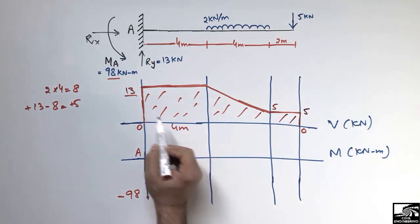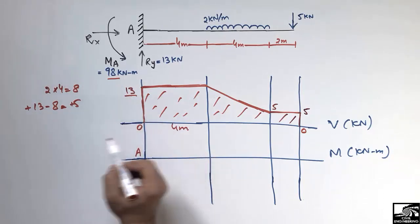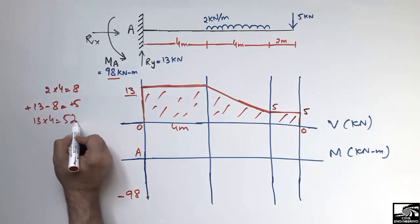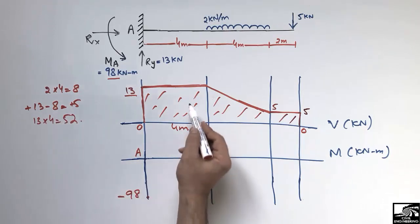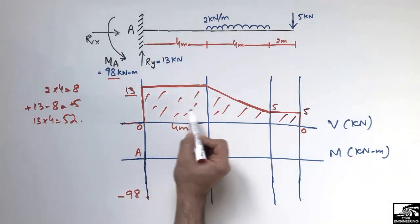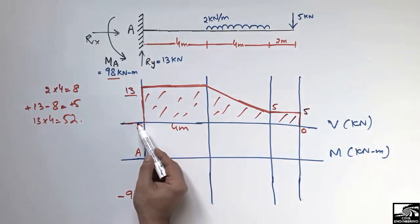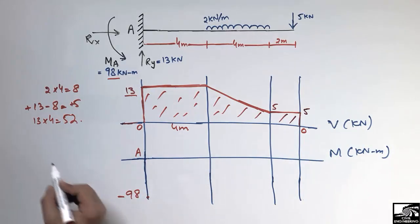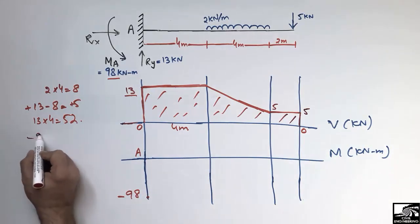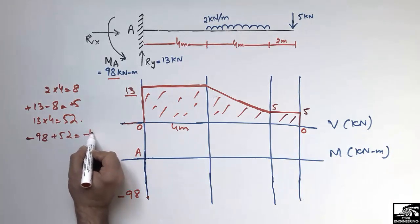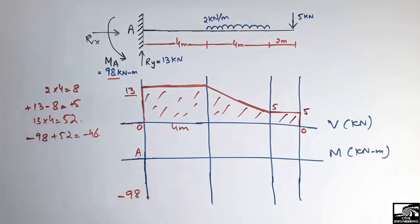Finding the area of the first rectangle: height is 13 and width is 4 meters, so 13 × 4 = 52. This rectangle is above the reference line so it is positive. Adding to minus 98: minus 98 plus 52 gives us minus 46 kN·m at that point.